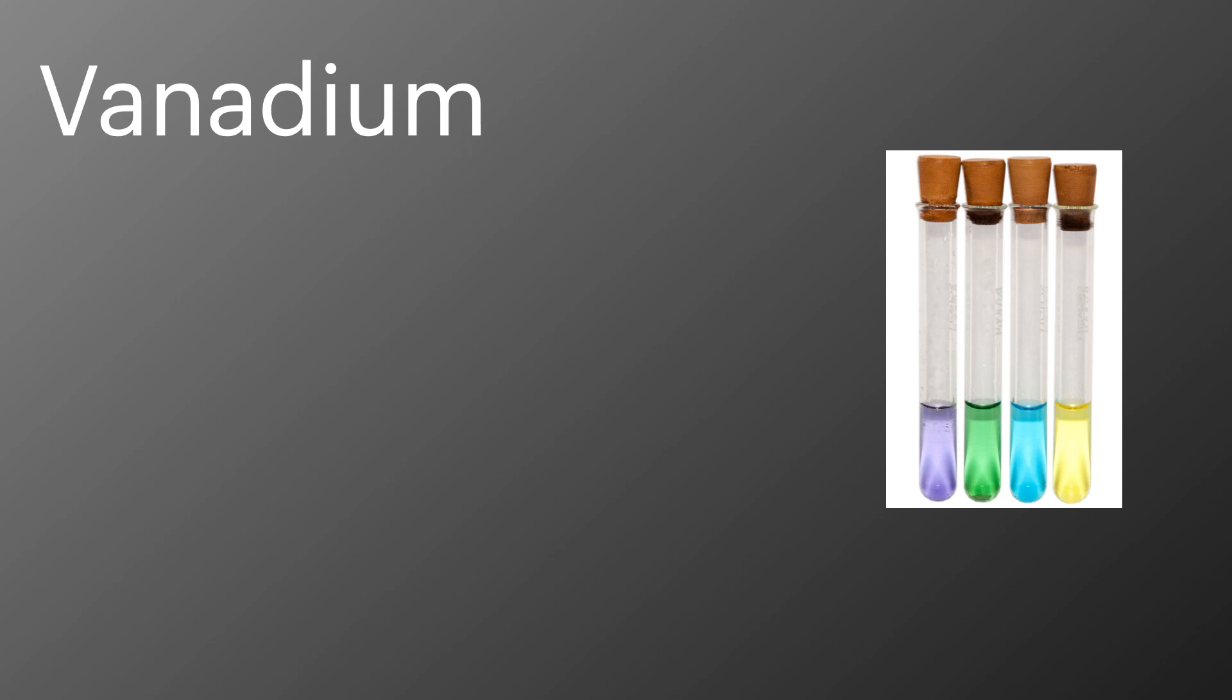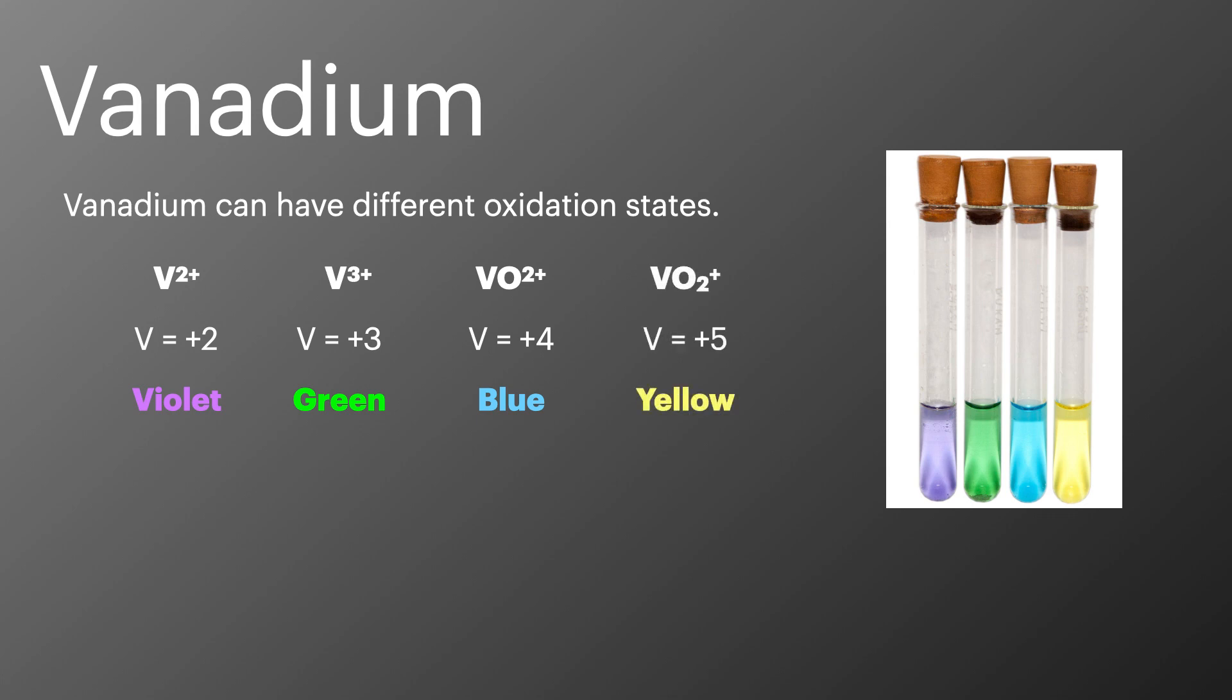One very specific example mentioned in the AQA specification and often used in exam questions is vanadium. Vanadium has four common oxidation states each forming different colors. We have vanadium 2+ which is violet, vanadium 3+ which is green, vanadium 4+ which is blue and vanadium 5+ which is yellow.